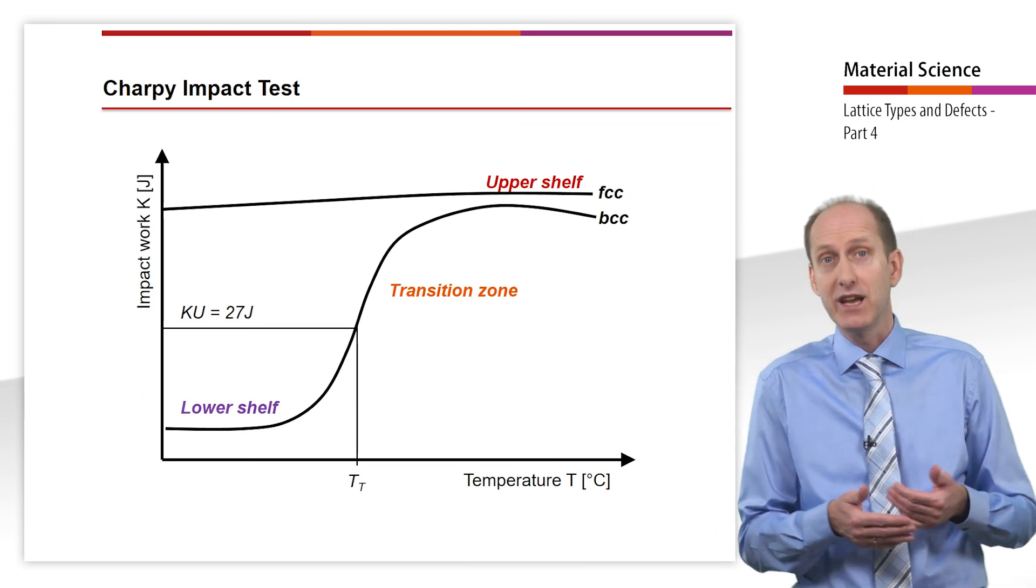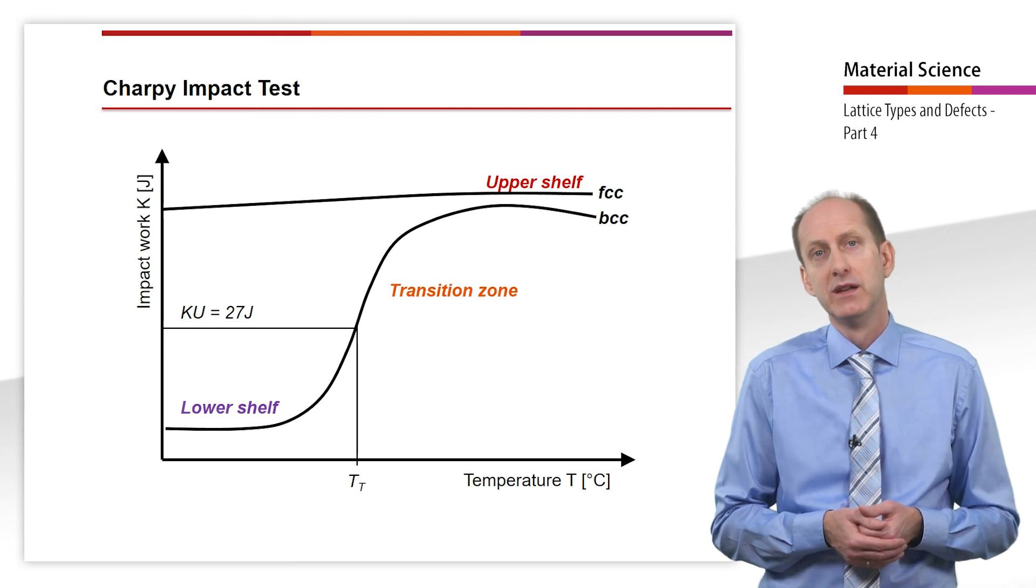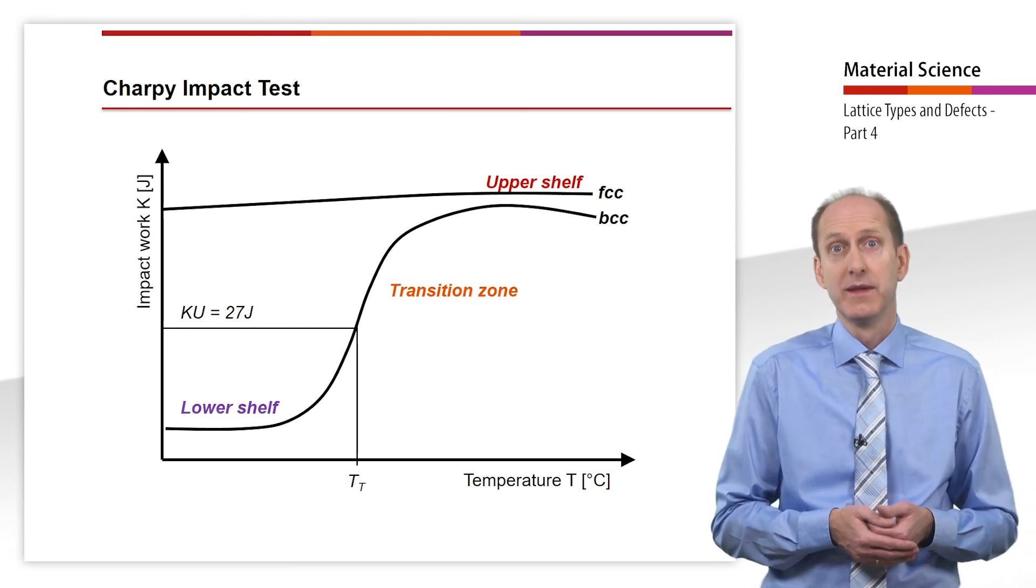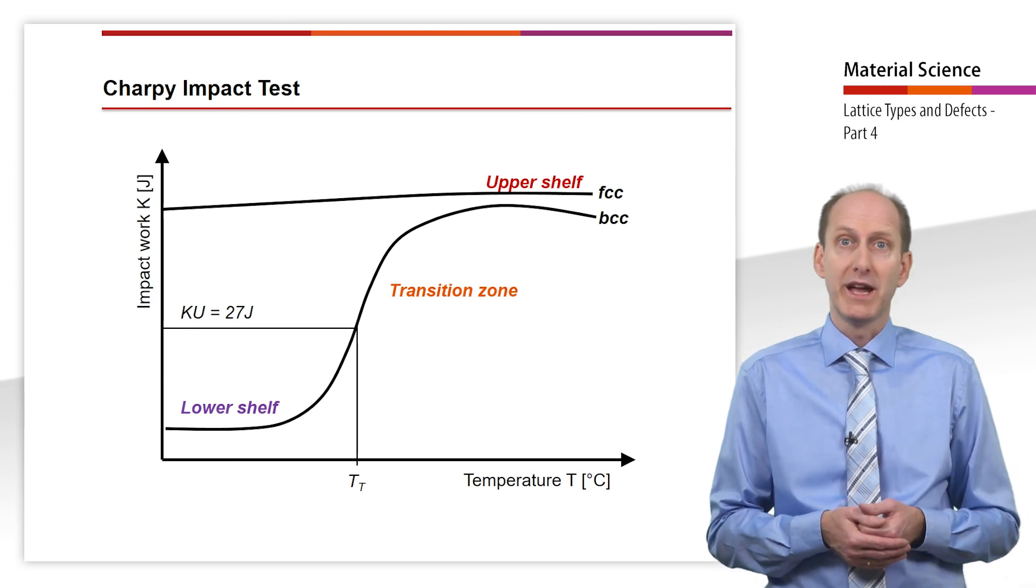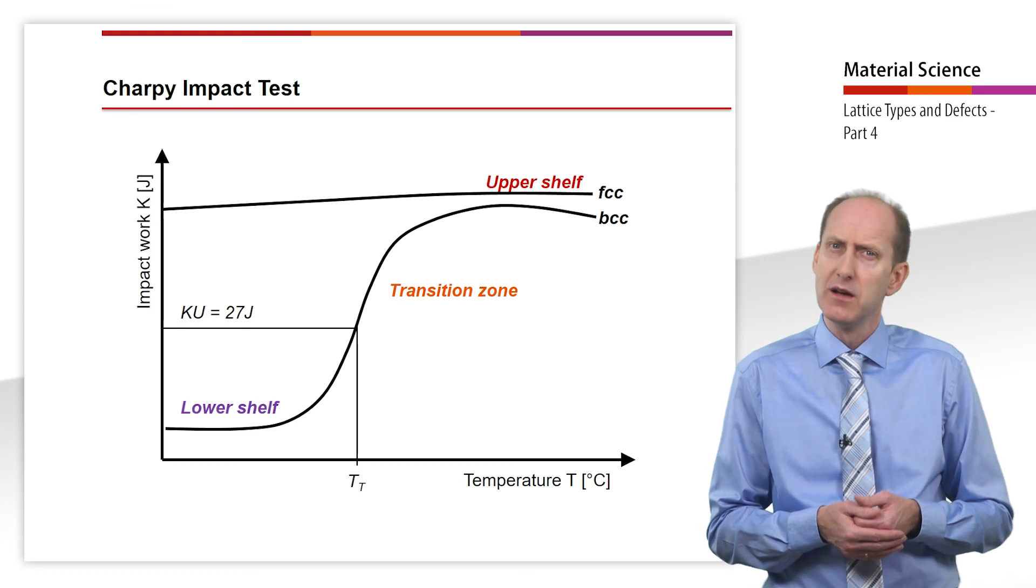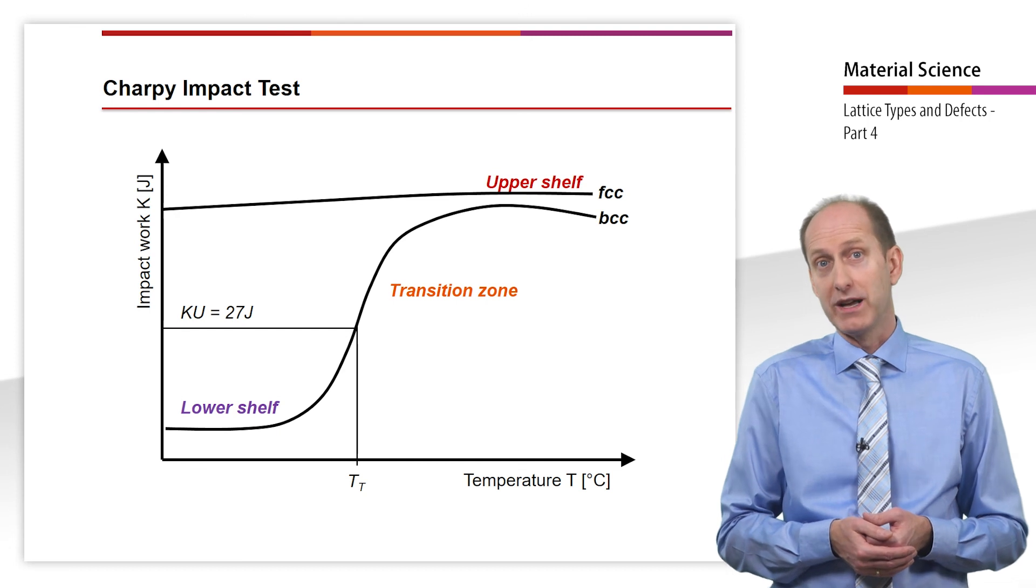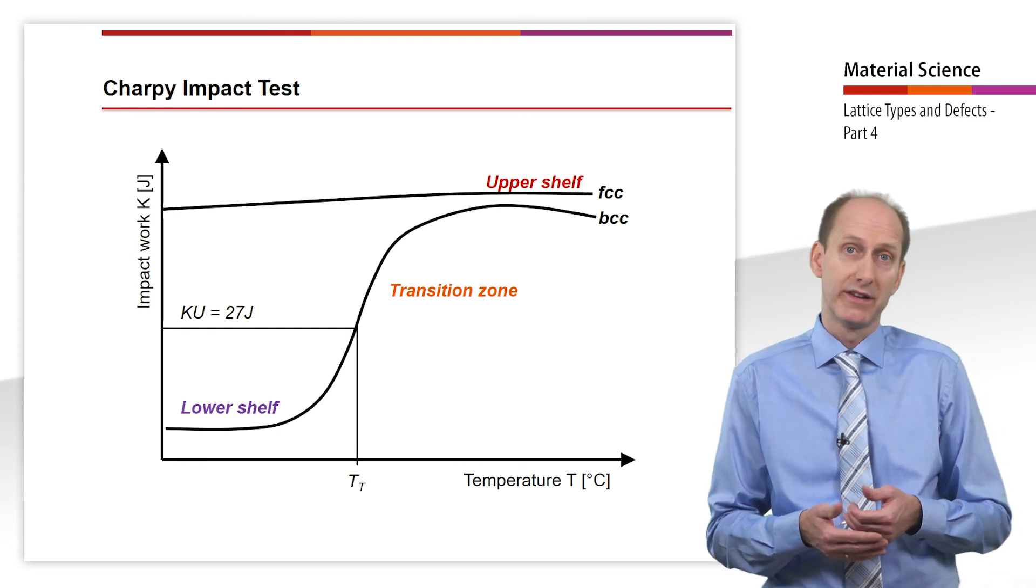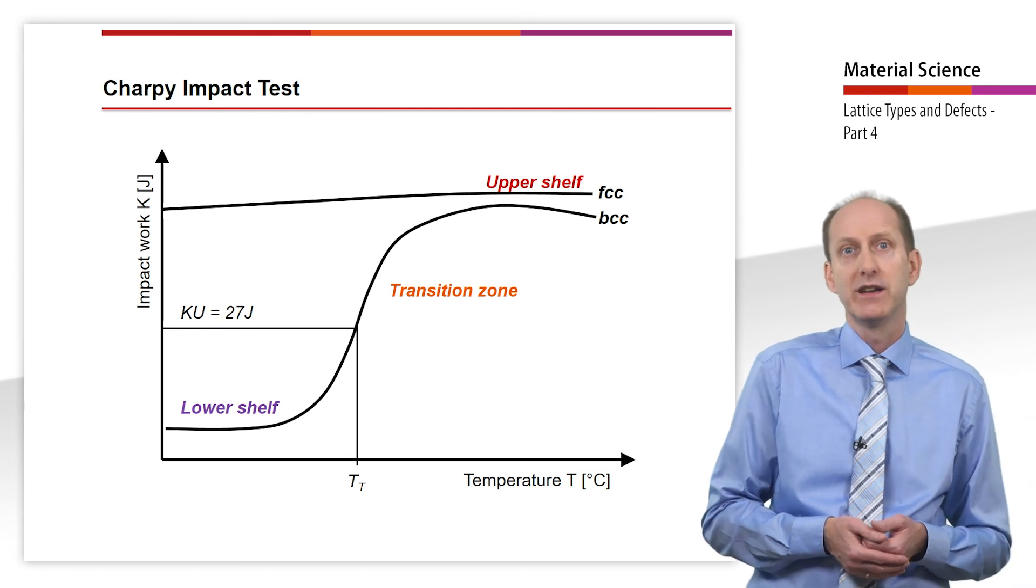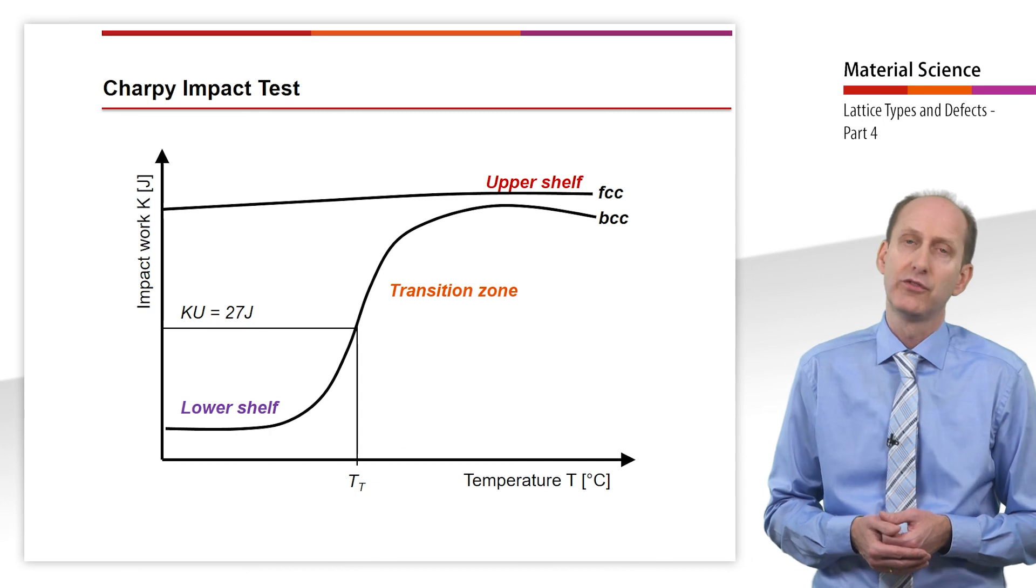After evaluating the tests carried out with varied test temperatures, we can obtain clear indications of a possible transition temperature TT. Since knowledge of the transition temperature from ductile to brittle material behavior can be of vital importance to the material selection, both the temperature as well as the value obtained for the notch bar impact work—in our example Ku equals 27 joule—are specified in the materials designation, especially when it comes to structural steel.